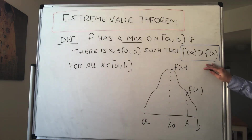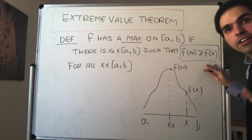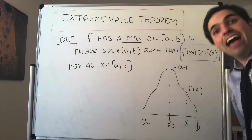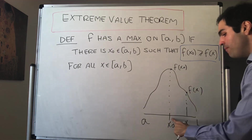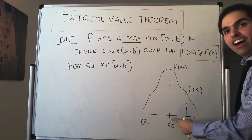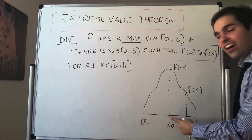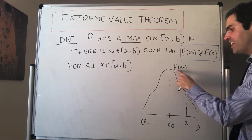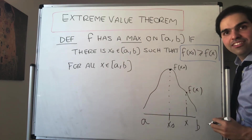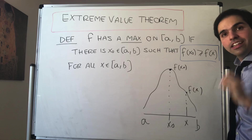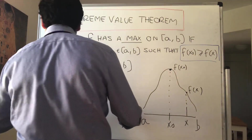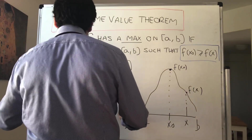Now, super important: the maximum has to be attained — namely, you actually have to find some x₀ such that the maximum is, in fact, f(x₀). And this is very important, because consider the following non-example.